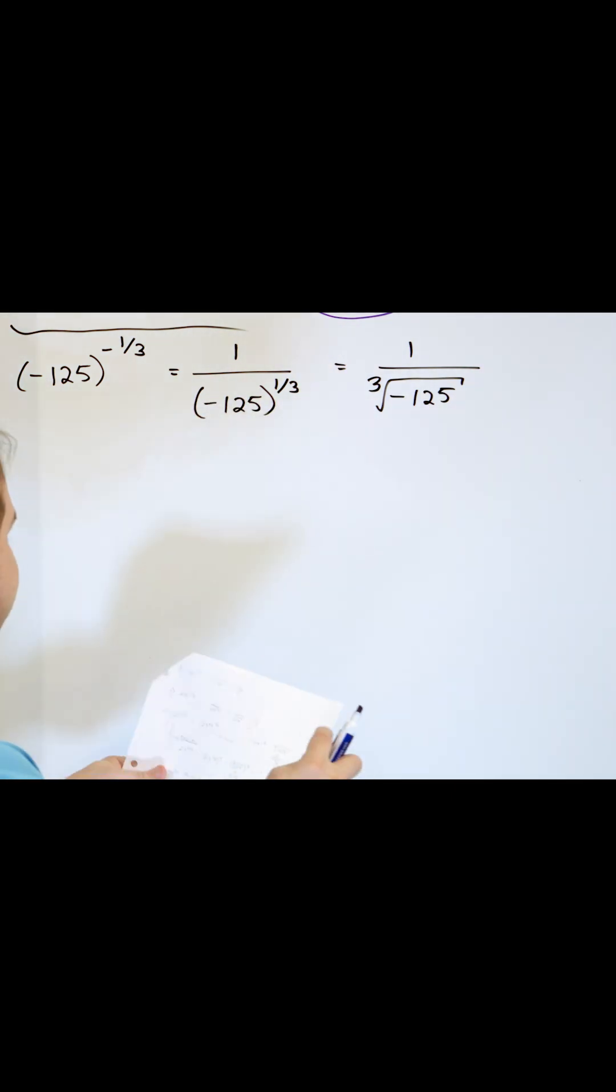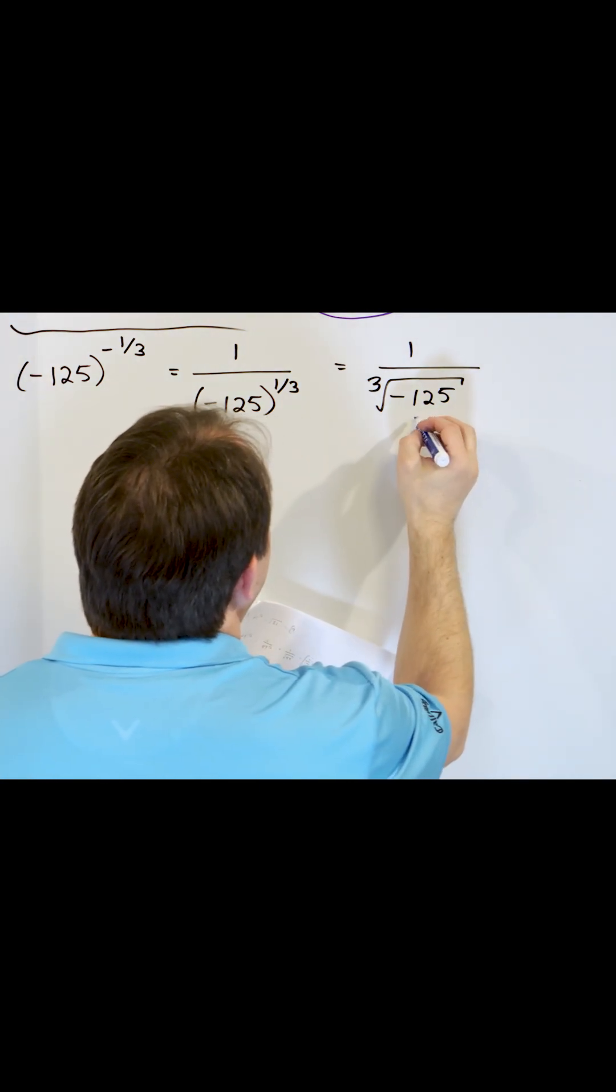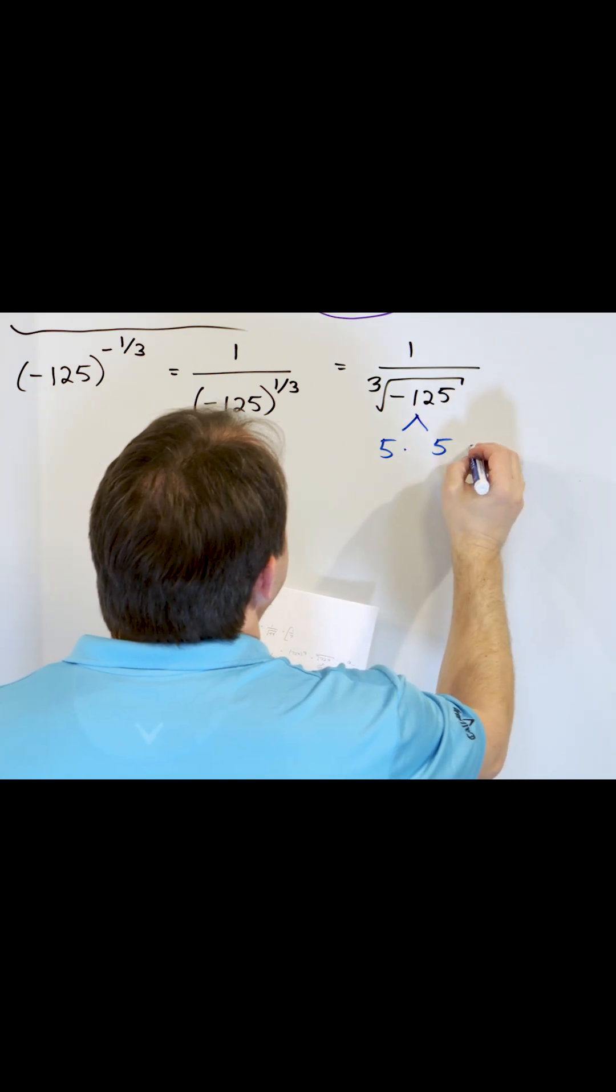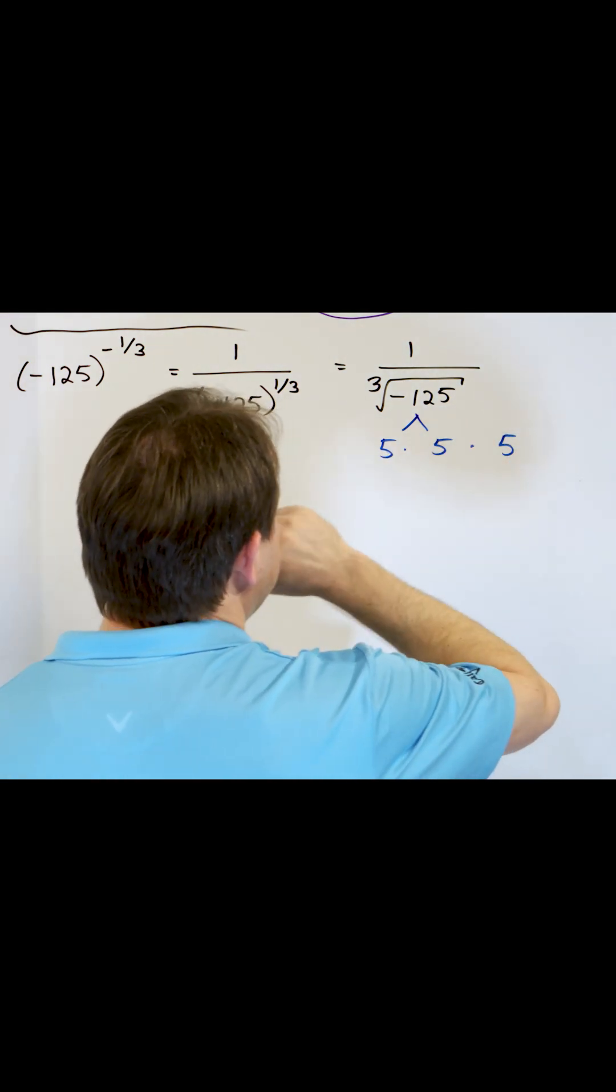And let's see how that is the case. So if this were just a positive 125, the way that you would write it is you would say 5 times 5 times 5, because this is 25, and then 25 times 5 is 125.